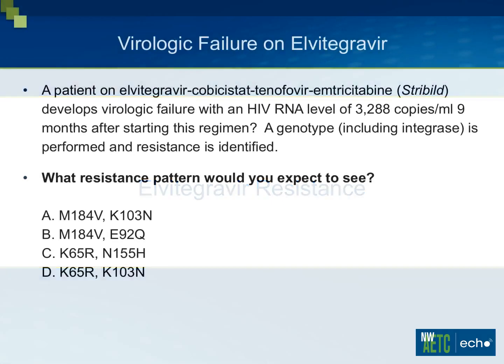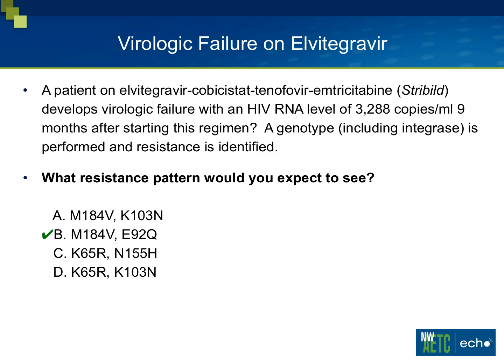Now let's look at elvitegravir resistance. A patient on elvitegravir/cobicistat/tenofovir/emtricitabine (STRIBILD) develops virologic failure with a viral load of more than 3,000 nine months after starting. A genotype is done — what would we expect to see with STRIBILD failure? Not M184V and K103N (that's typical of efavirenz failure). What about M184V and E92Q? Most of you probably haven't heard of the E92Q mutation. The N155H is classic with raltegravir but not elvitegravir. Interestingly, the signature mutation with elvitegravir is this new mutation called the E92Q.